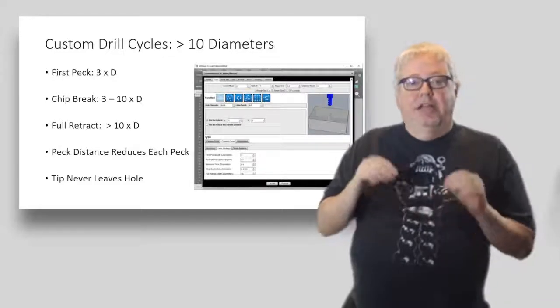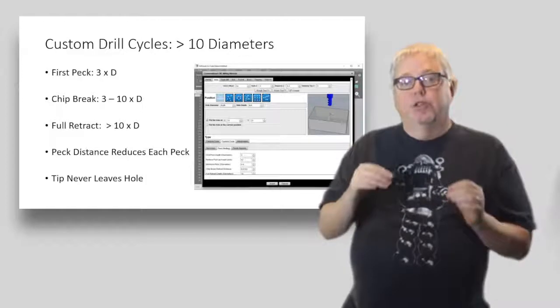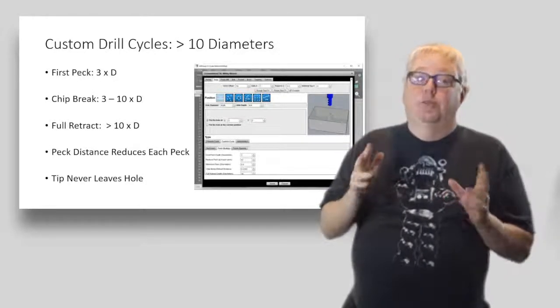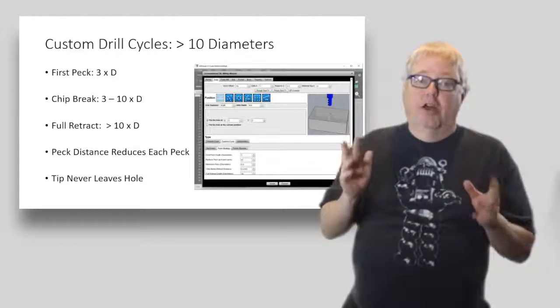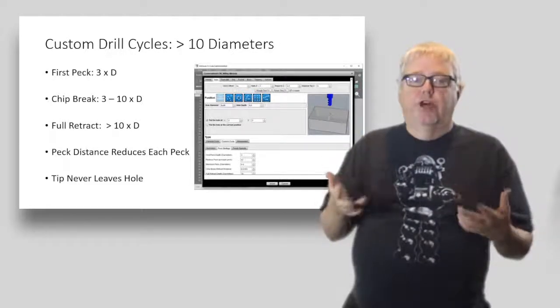You get better feeds and speeds even on shallower holes, and you can go a lot deeper with a parabolic flute drill. Beyond 10 diameters, you need to consider a custom drilling cycle. In fact, if you want to get the maximum performance, the best tool life, and the shortest cycle times, you might even consider custom drill cycles for any hole over five diameters.